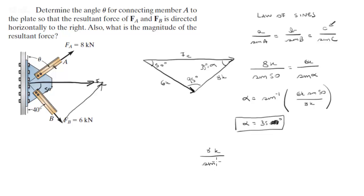C or FR over sine of 95, which we just found. And then C, which is equal to the resultant force, is equal to 10.4 kN.